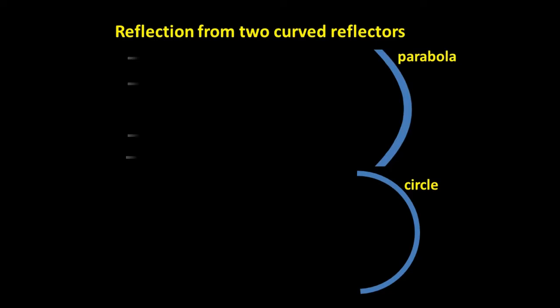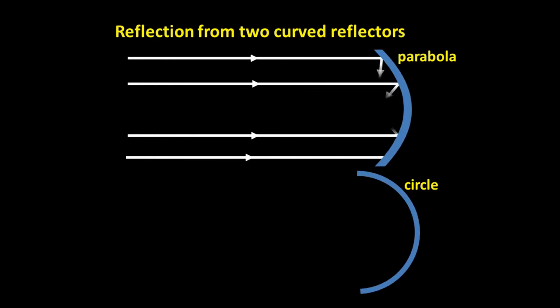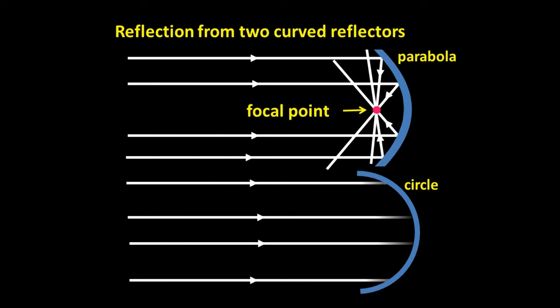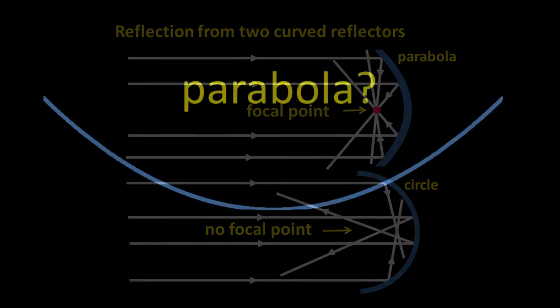Only a parabola can focus incoming light beams to a definite focal point. Circular reflectors kind of focus the light, but not really all that well. So, what is a parabola?